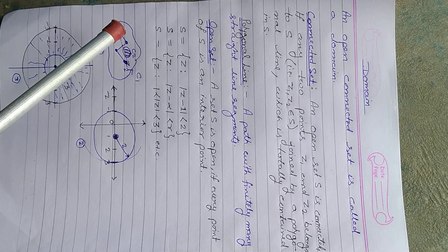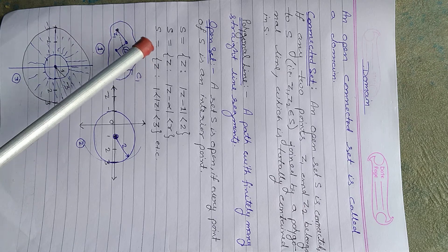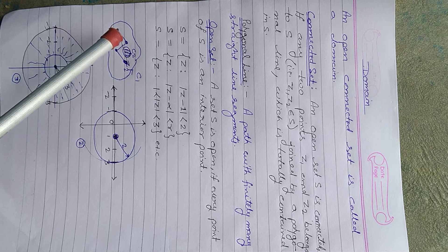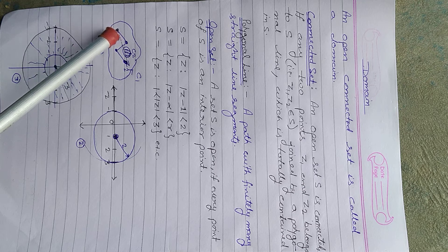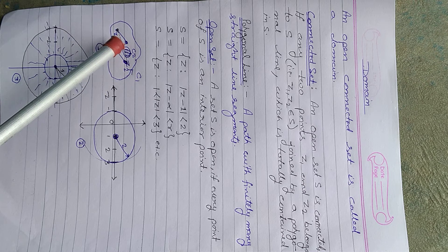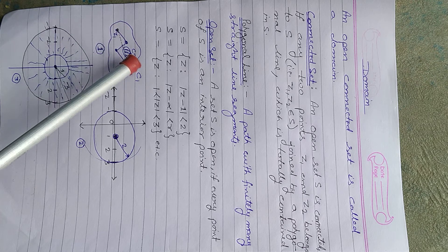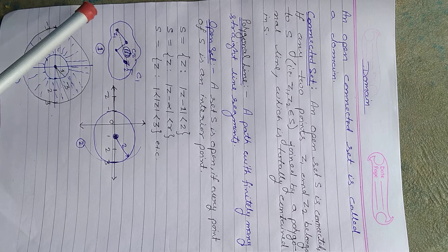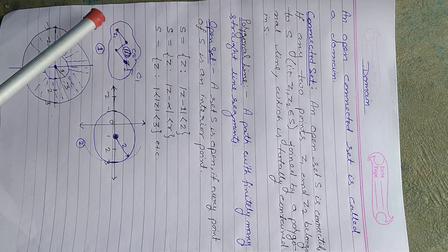We can understand this by a figure. Suppose this is a contour C1, and inside this contour there is another gap contour C2. We have two points z1 and z2, and we want to join them by a straight line. That straight line is not totally contained in C1 because it passes through C2, which is a gap.